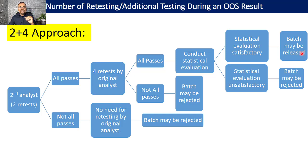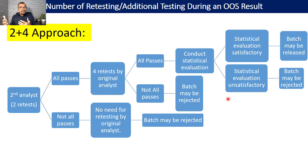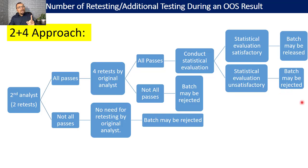Where the statistical evaluation is unsatisfactory — indicating the product may not be consistent in quality — QA may reject the batch. While making the rejection decision, QA should also consider the product history.